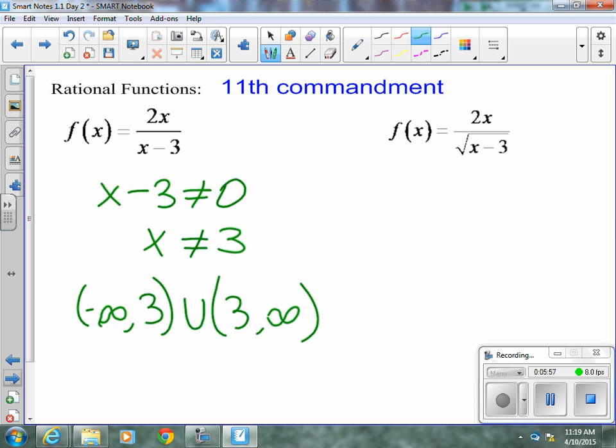Now, this next example combines the idea of a radical and a denominator. So, typically, in a radical, that x minus 3 would have to be greater than or equal to 0. But, because it's in the denominator, we know that it's not allowed to equal 0. So, we know x has to be greater than 3. And, our domain is 3 to infinity.